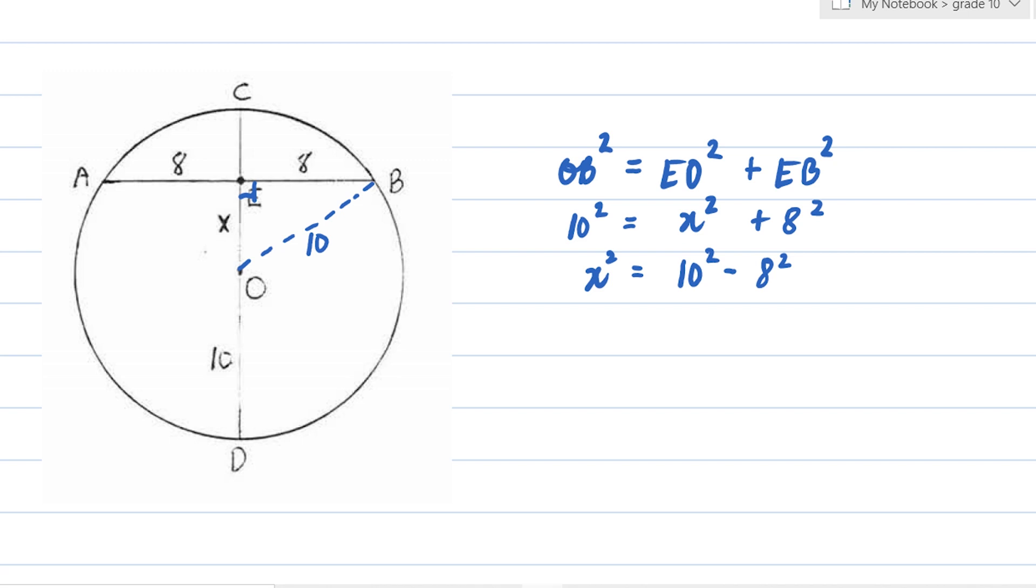So we have X squared equals 10 plus 8, that's 18, times 10 minus 8, that's 2. So we have X squared is equal to 18 times 2, that's 36. Therefore, X is equal to plus or minus 6. Again, we're just going to use the positive one. And therefore, X is equal to 6. The question here is find X. Okay, find X. X is equal to 6.